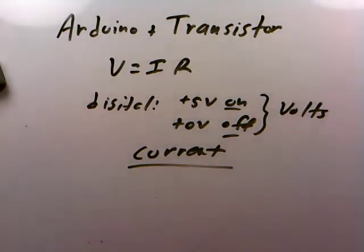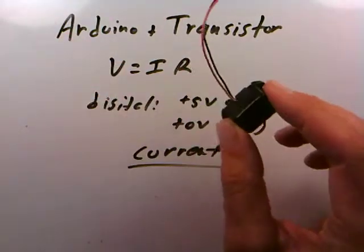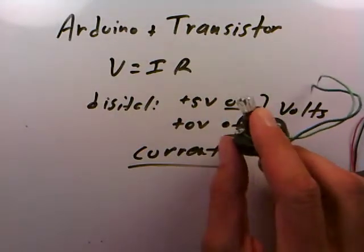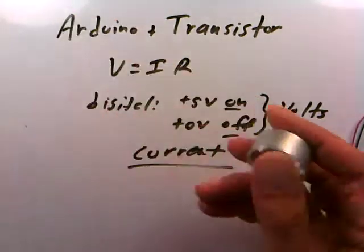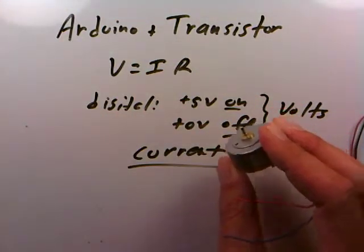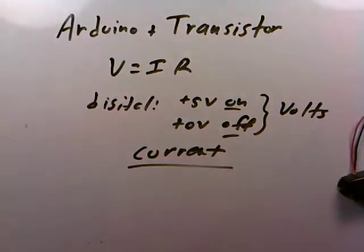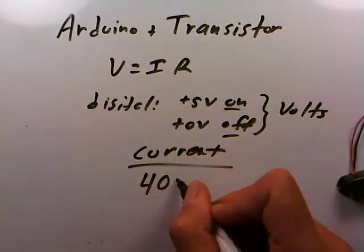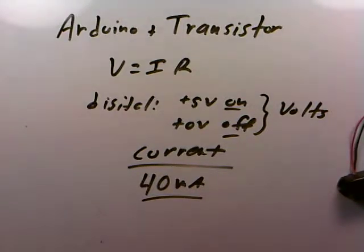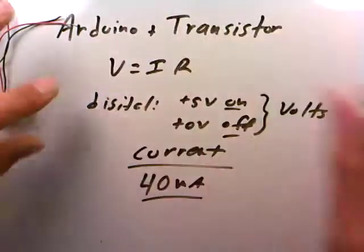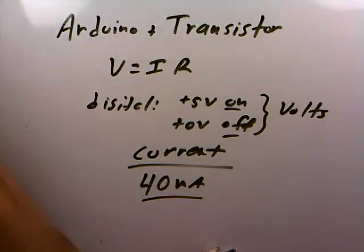The question is: we can get 5 volts out of the Arduino output line, but does it have enough current to really drive the buzzer loudly, heat up the filament in the light bulb enough to glow, or energize the motor coils strongly enough to make it turn? It turns out the output of an Arduino is only good for about 40 milliamps — 40 thousandths of an amp. If it's not enough, let's see if we can use a transistor to fix that.